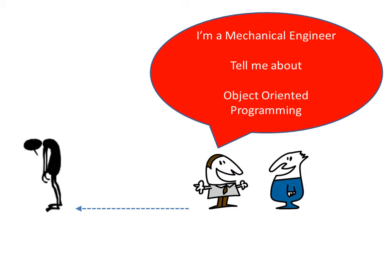This talk is aimed at mechanical engineers who've tried to take an interest in object-oriented programming, but who've been left dissatisfied in some way. Maybe the explanations have been too theoretical, or you can't see the real point of it, or it doesn't seem relevant to your coding, or maybe you can't see how to apply it in practice. So I'm going to come at it from a different direction that I'm hoping will hit the spot better for mechanical engineers.